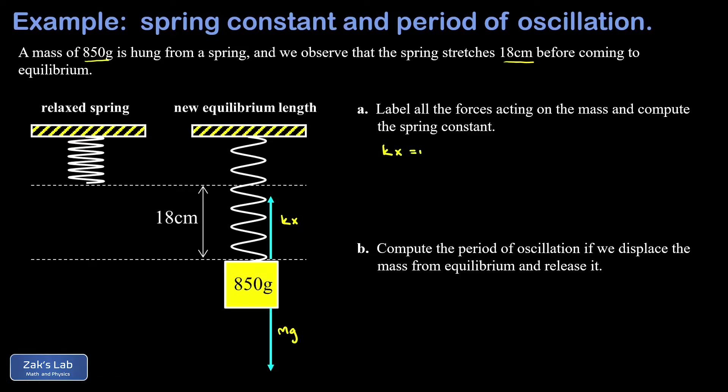So just working symbolically for the moment, we have kx equals mg in order for this thing to be in equilibrium. We solve for k, and we get mg over x.